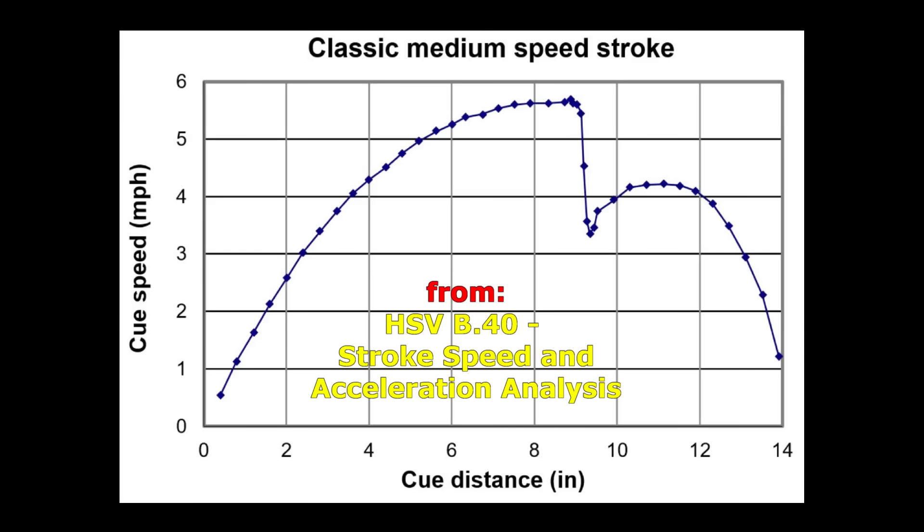In a stroke acceleration study I did with Bob Jewett many years ago, we used slow motion video analysis to show how cue speed varies during a stroke. This graph shows how measured cue speed varied over distance with a typical good stroke. The speed increases gradually as the cue is smoothly accelerated during the forward stroke. Just before tip contact, the speed has reached a maximum value so there is no more acceleration.